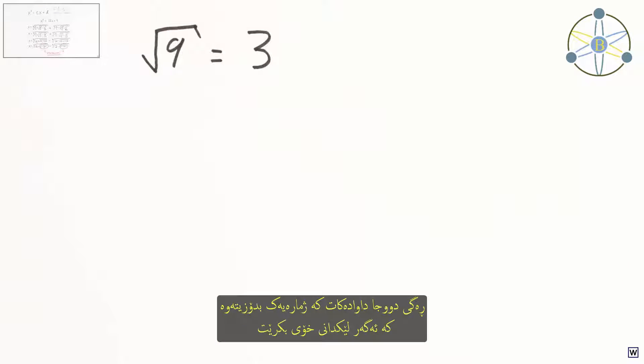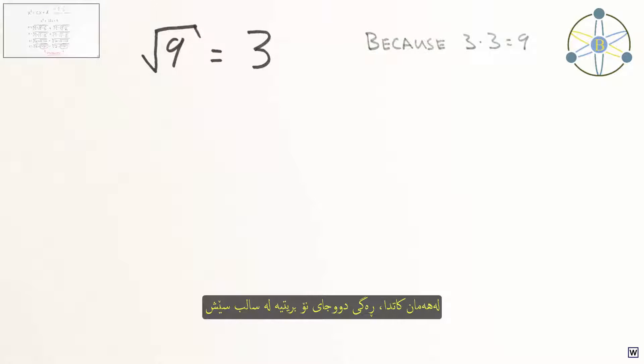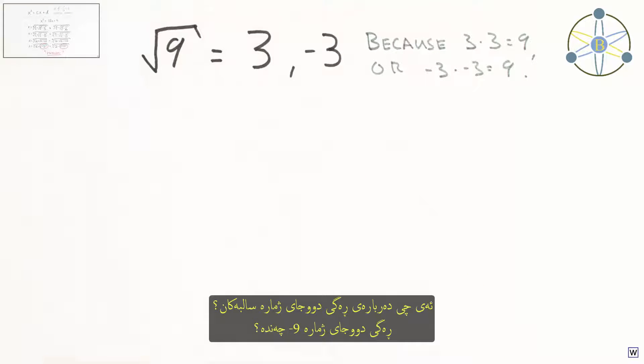Square roots ask us to find a number that, when multiplied by itself, yield the number inside the root sign. The square root of 9 is 3 because 3 times 3 is 9. Importantly, the square root of 9 is also negative 3 because negative 3 times negative 3 is also positive 9. But what about the roots of negative numbers? What is the square root of negative 9? Positive 3 won't work, and neither will negative 3, so we're stuck.